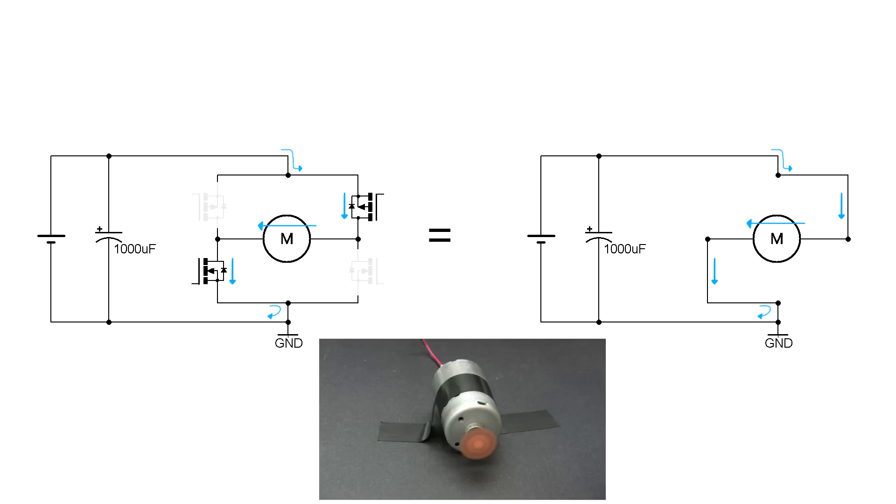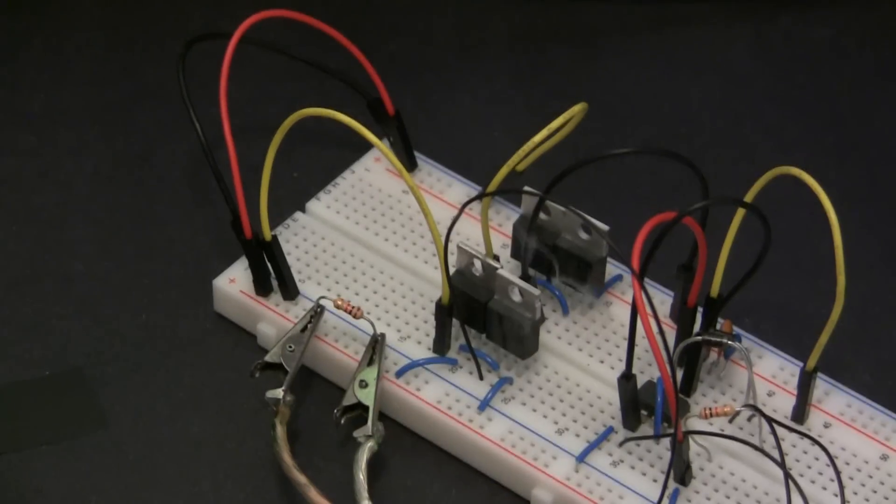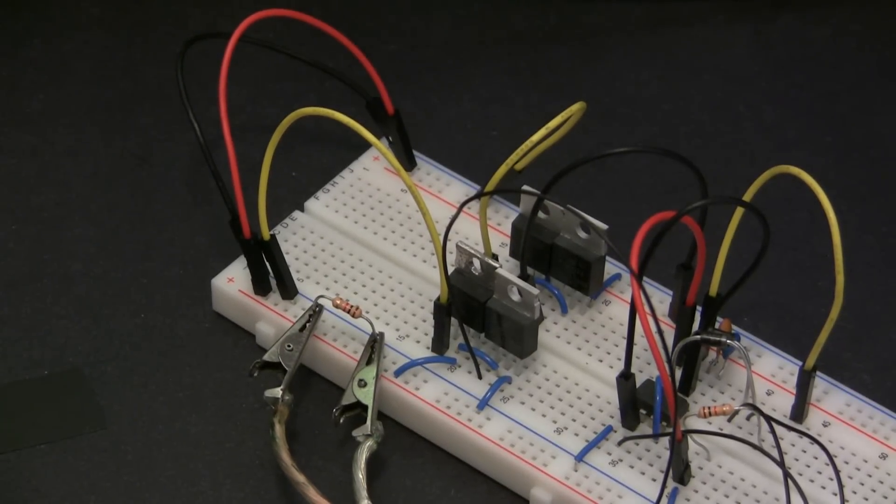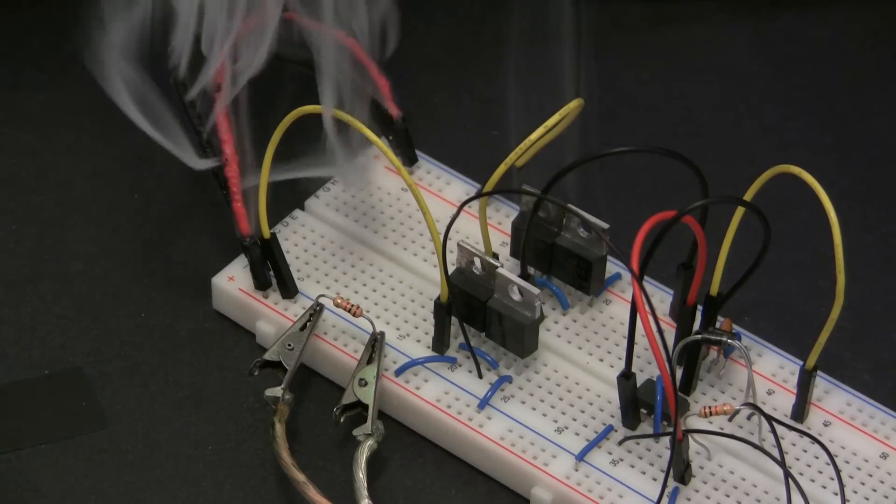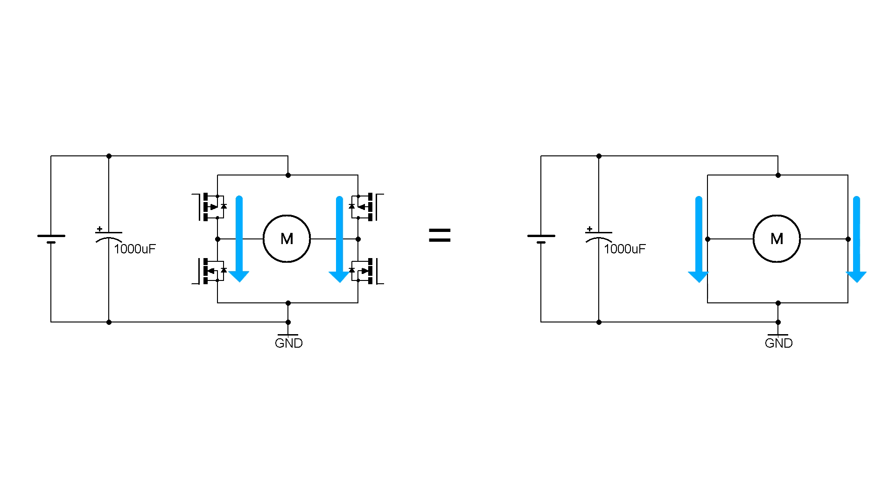Hey, what happens if we turn all the transistors on? The motor should go twice as fast! Ah, crap! Yeah, so if you turn all the transistors on, you create two high current paths straight from power to ground, effectively shorting out your power supply and blowing up the transistors. Let's make sure that never happens again. Let's make this circuit idiot proof so people like me can use it.